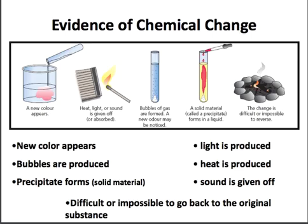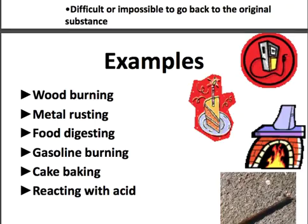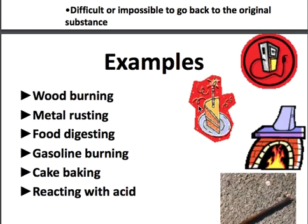For example, if you burn a piece of wood, you can't change it back — it's burned, it's ash, you can't put it back together and make it wood again. Metal rusting is another example: if you leave your bicycle outside and it rusts, turns that brown color and flakes off, that is something you cannot change back — it's a chemical change.